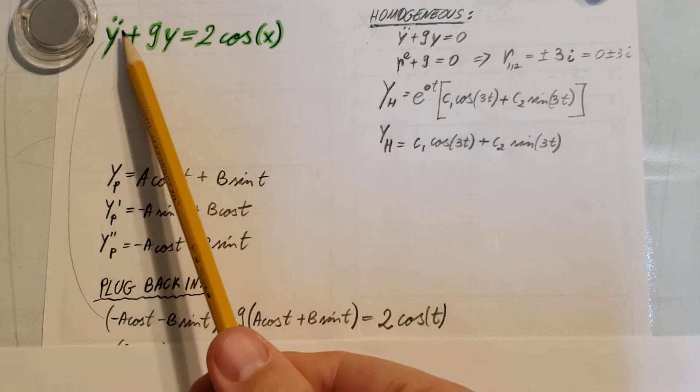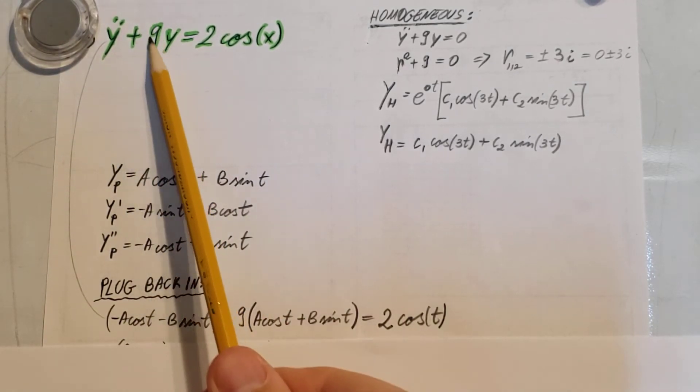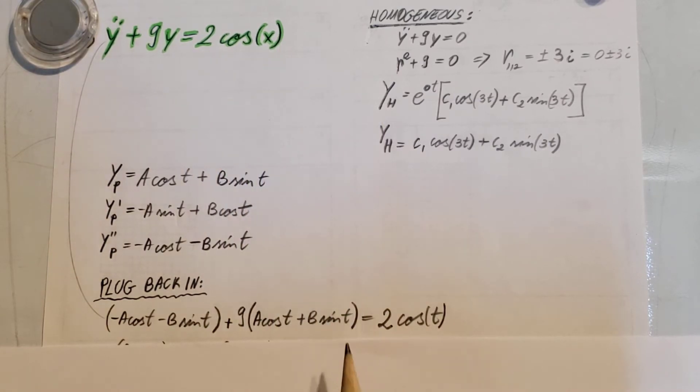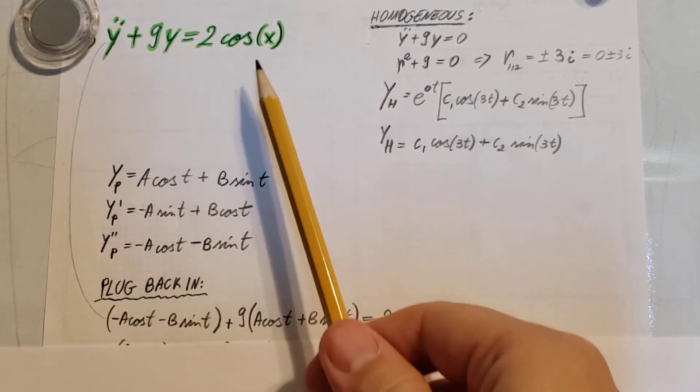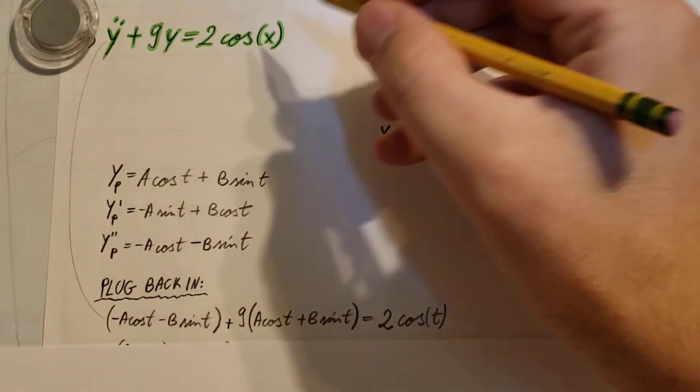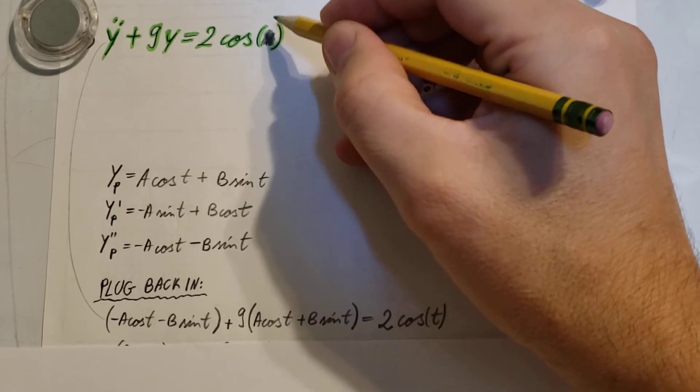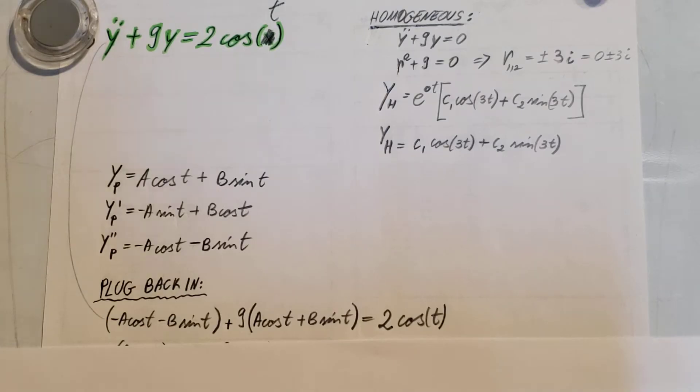Now let's come back here and plug everything in. Y double prime will be replaced by this, plus 9y—instead of y we're gonna put this right here, and on the right-hand side, 2 cosine x doesn't change. I switched everything to t when there was an x here, so let's pretend everything is consistent with t.